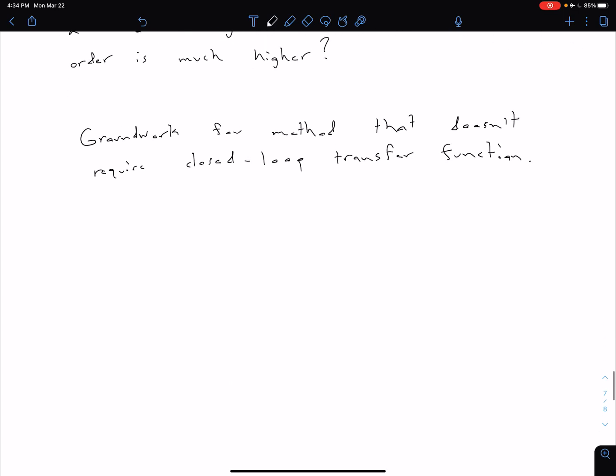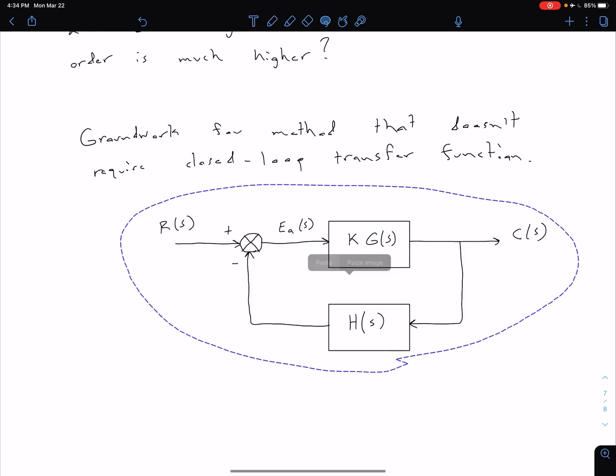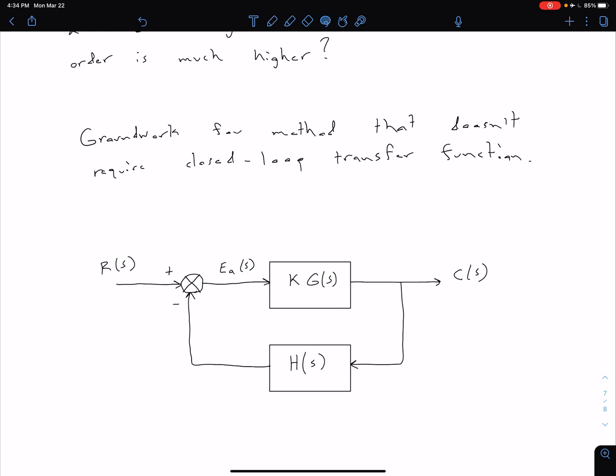So let's consider just a general system. Here we have some general system. We see we have some input R of S, some output C of S, and then we have our actuating signal E sub A.